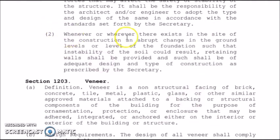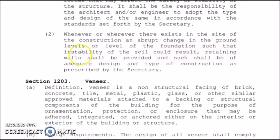Second, wherever there exists at the site of the construction an abrupt change in ground levels or level of the foundation such that instability of the soil could result, retaining walls shall be provided, and such shall be of adequate design and type of construction as prescribed by the Secretary.